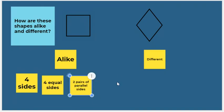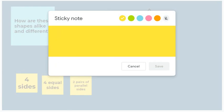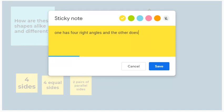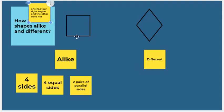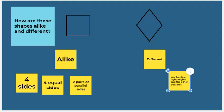How are they different? There's a lot of things alike about them — four sides, four equal sides, two pairs of parallel sides. But there is one thing that's different: this shape has four right angles, and the other has four angles but they are not right angles. So one has four right angles and the other does not.